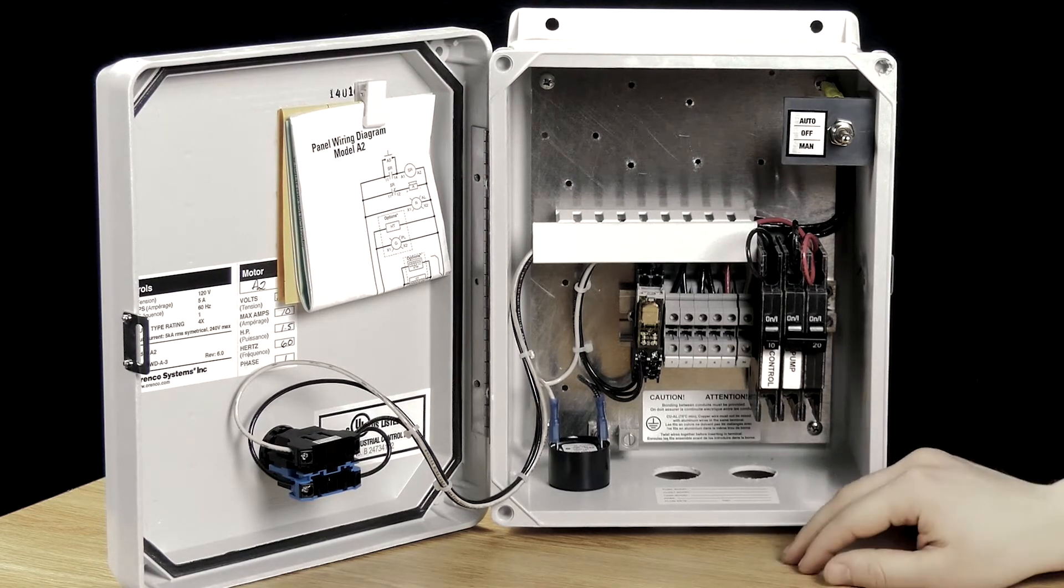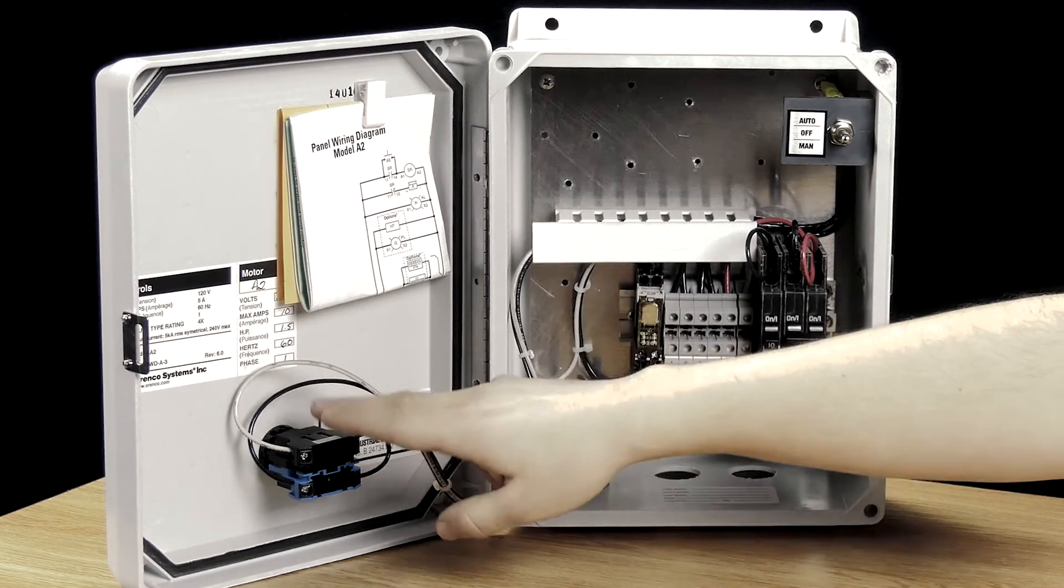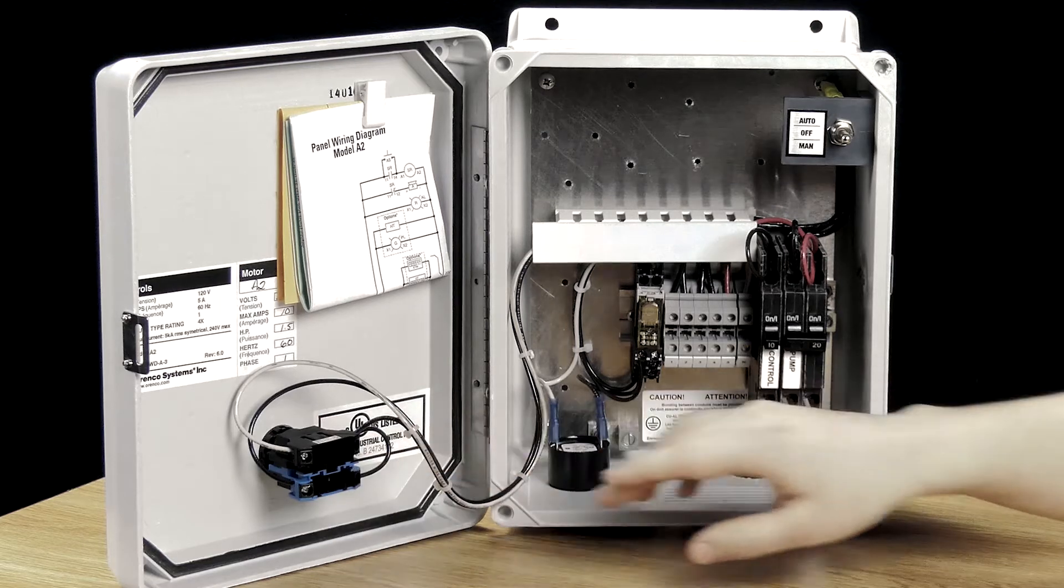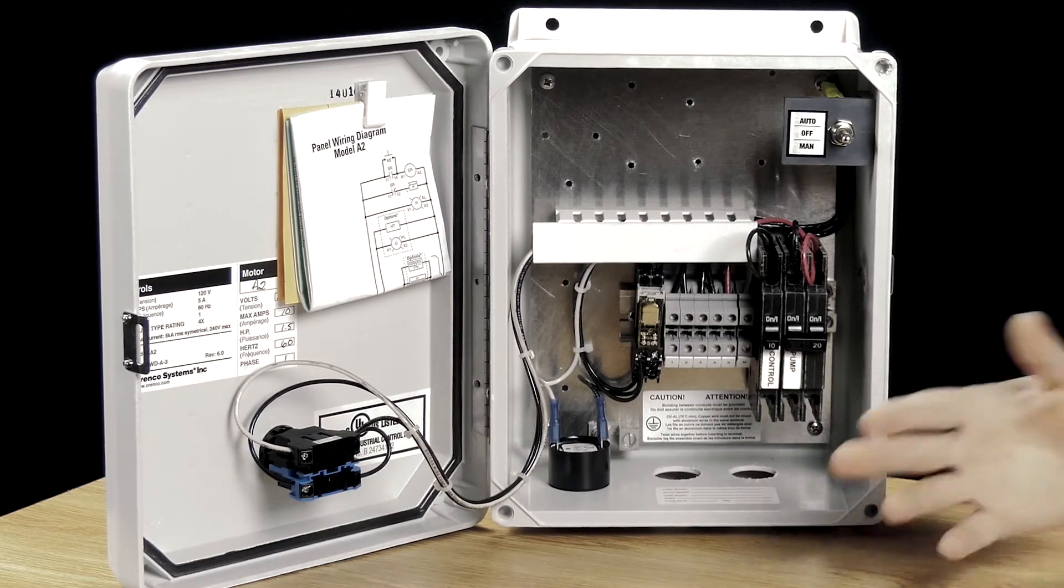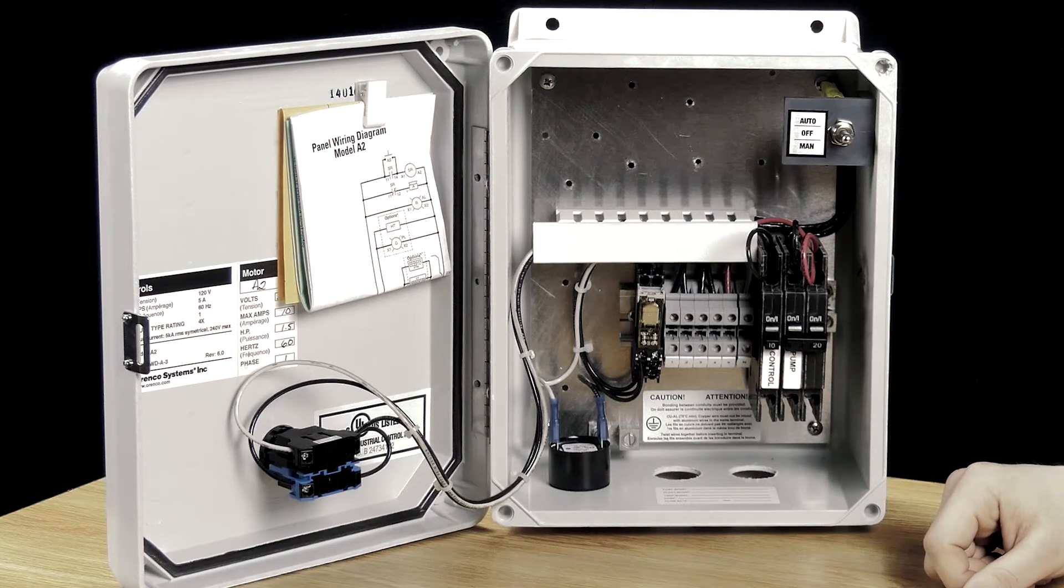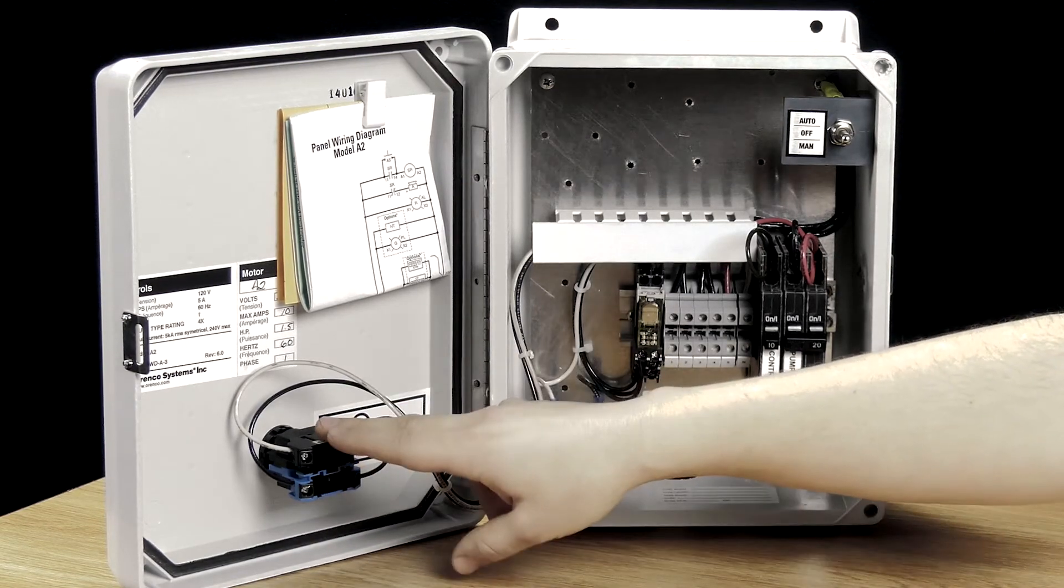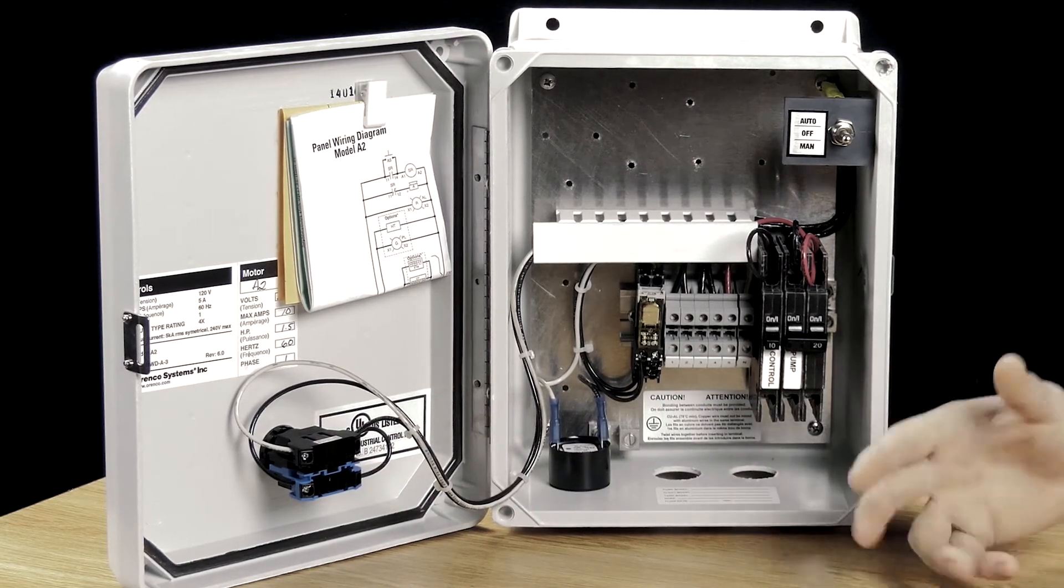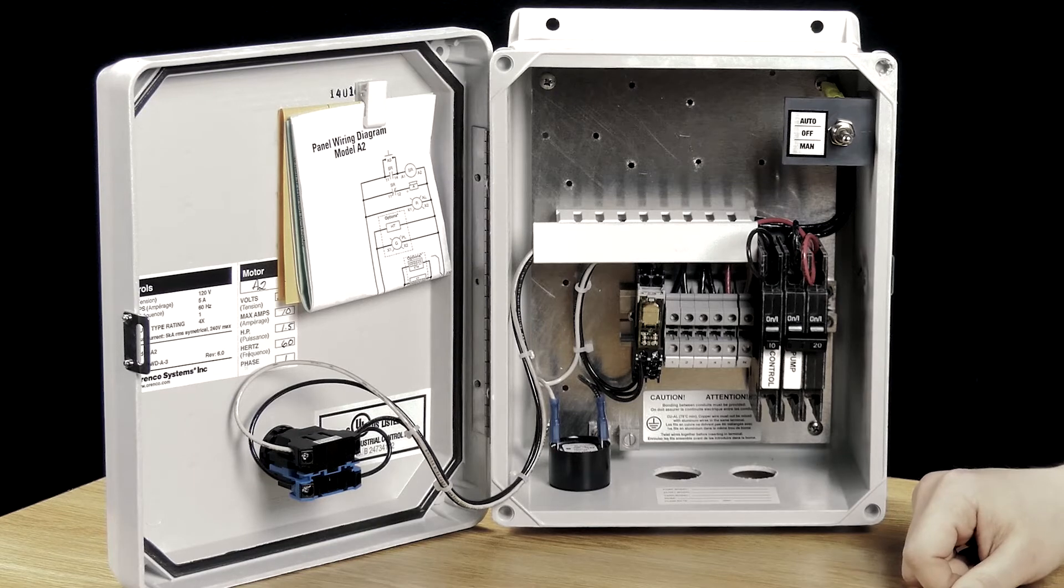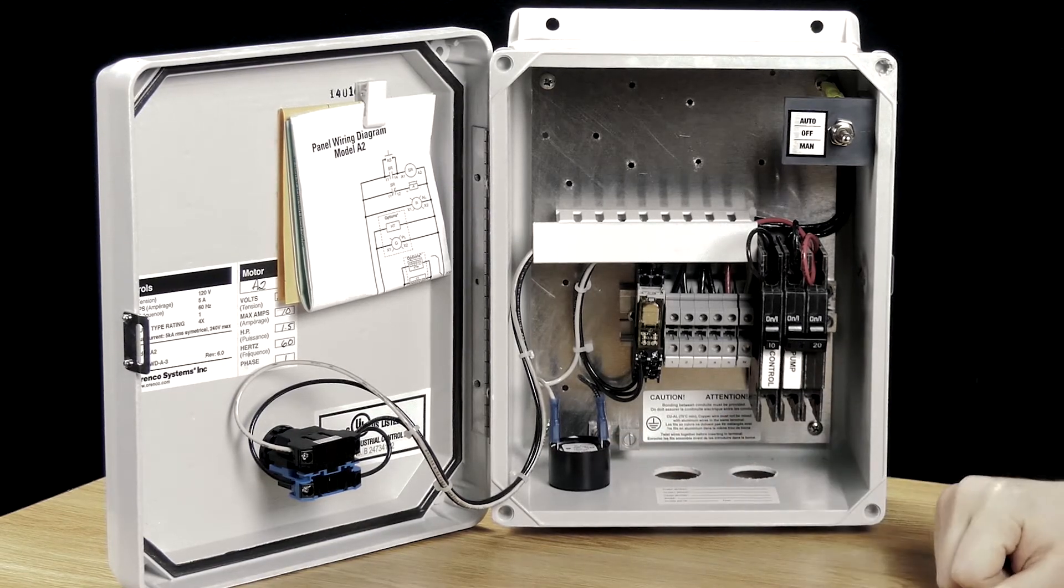In addition to that, we've got the audible alarm here, which can be silenced with the push-to-silence button. The nice thing about these panels is when you do have an alarm condition occur, both the audible alarm and the visual alarm, which is shown on the face of the panel, are going to notify you or alert you. The light is going to be red and then the alarm is going to be making a whole lot of noise.